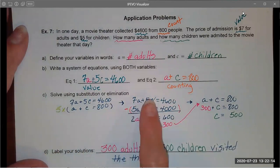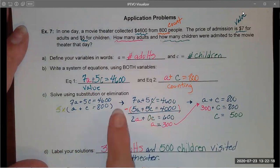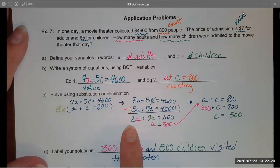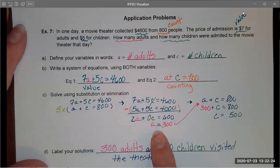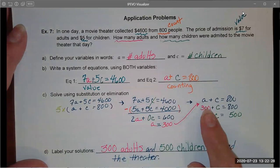So I did 7A minus 5A is 2A. My C variable cancels out, equals 600. I got the value of the adults. Then I substituted the number of adults into my counting equation and learned that there were 500 children.